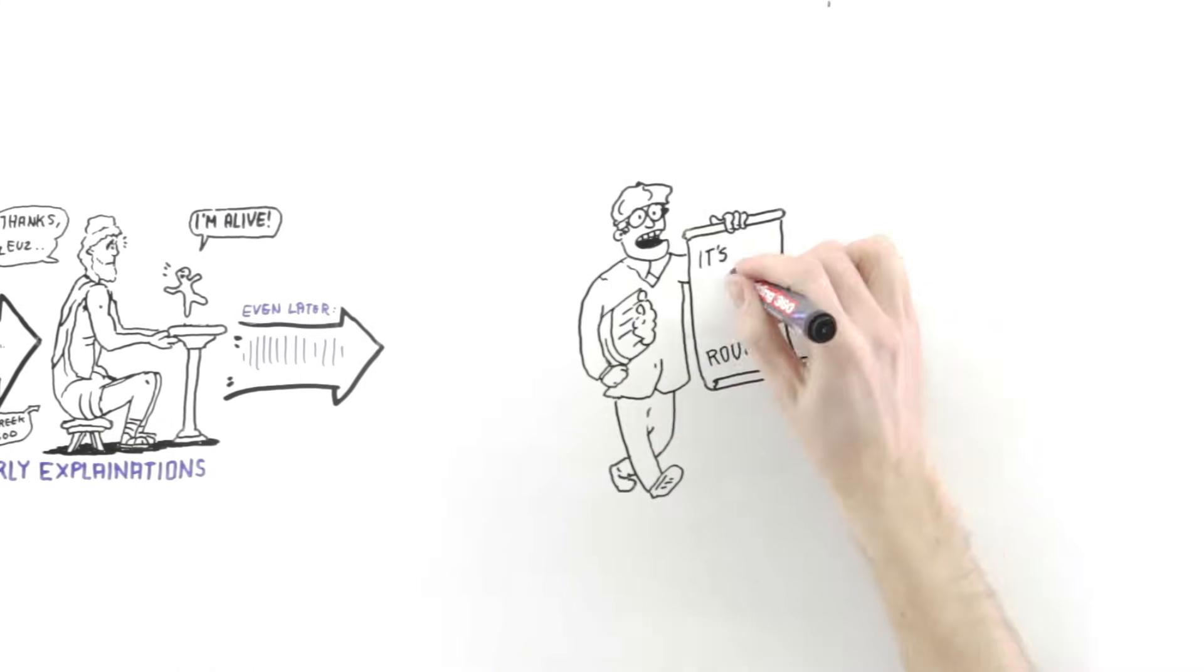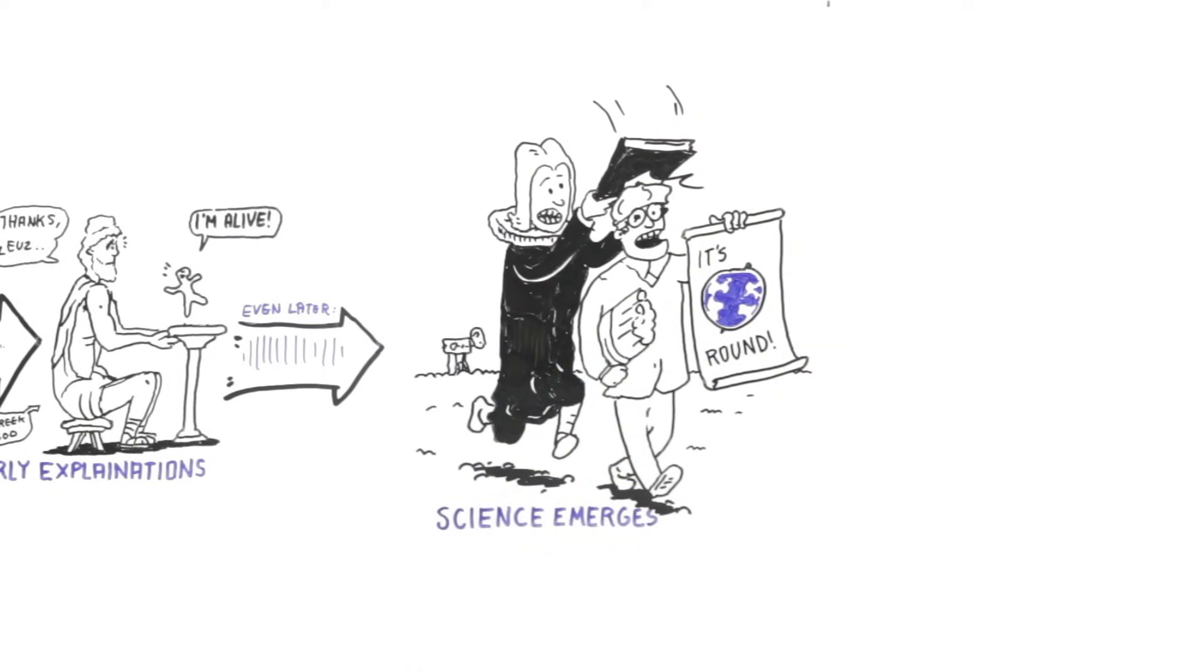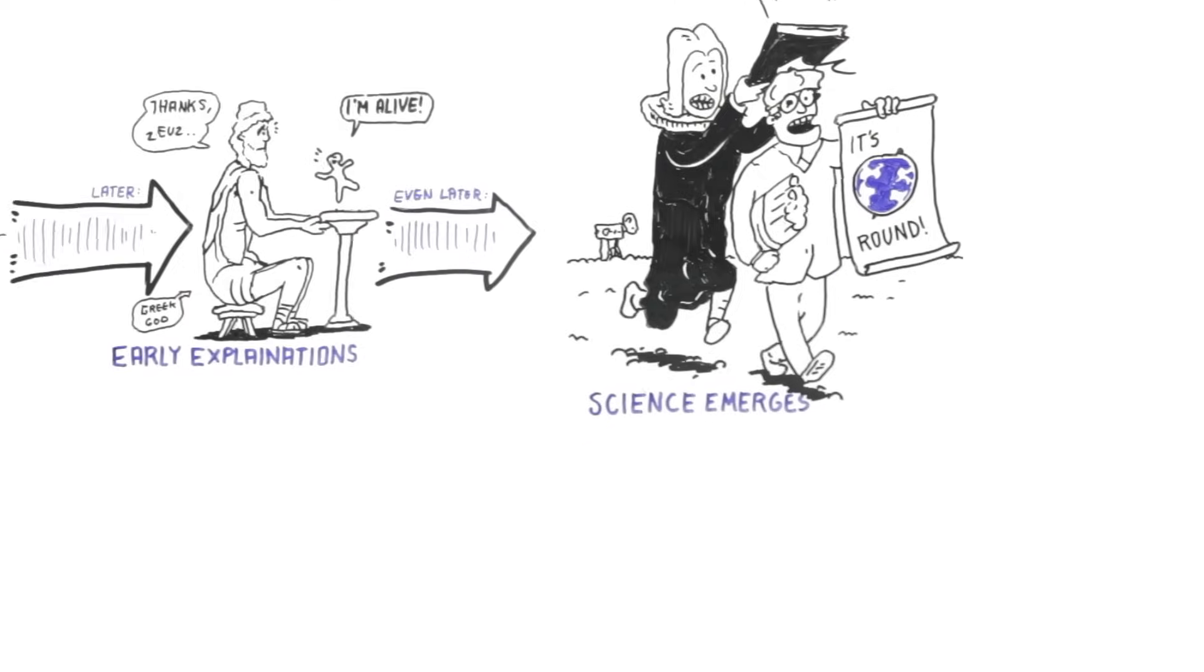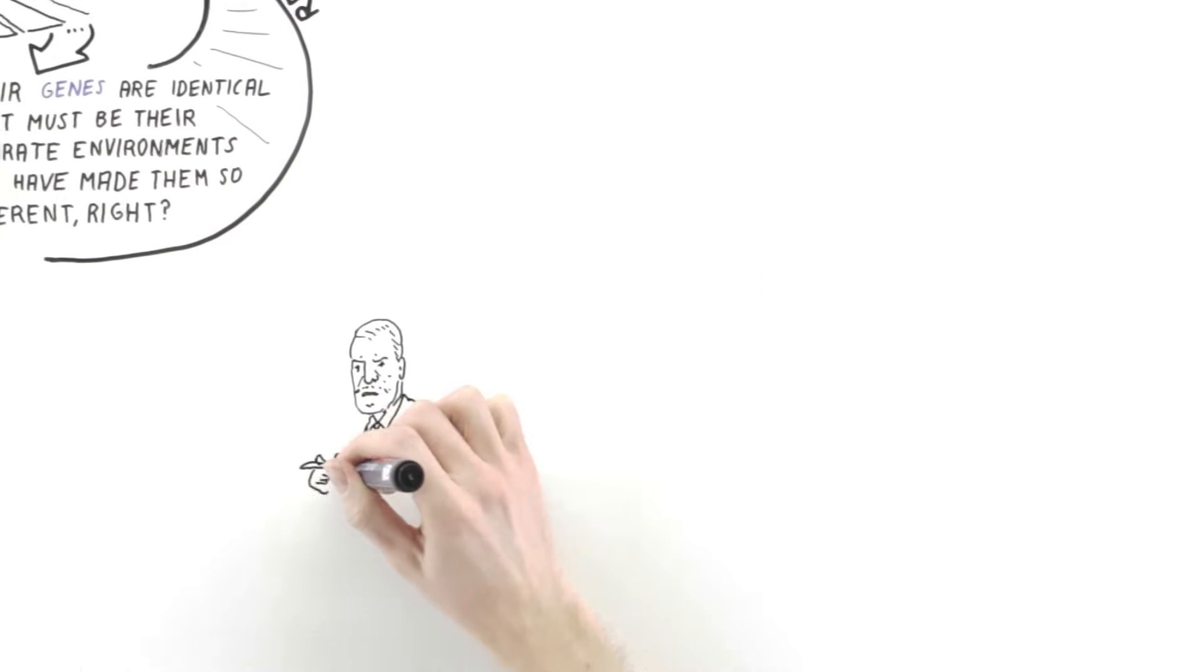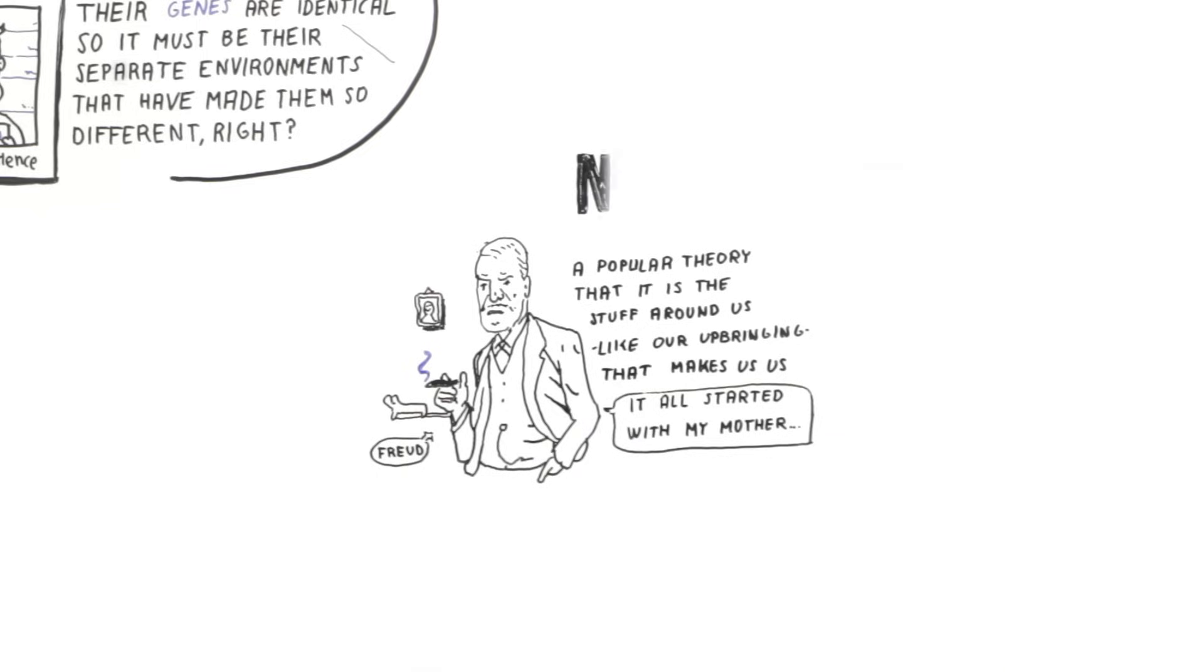As the centuries whizzed by, science emerged and fought a tough battle to gain credibility. Eventually, social science emerged with the popular theory that our environment is what makes us us. Let's call this nurture.